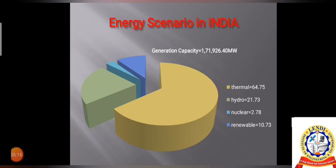This is the energy scenario in India — the total capacity of different energy sources used in India. Mostly thermal energy is utilized, at about 64.75%. After thermal comes hydropower at around 21.73% of total capacity, followed by nuclear energy at 2.78%. Slowly, renewable energy usage is increasing day by day. Currently, renewable energy is about 10% of total capacity. In the future, availability of sources like coal, gas, and fuels will be very limited, so usage of non-conventional sources should be minimized and renewable energy sources should be increased.